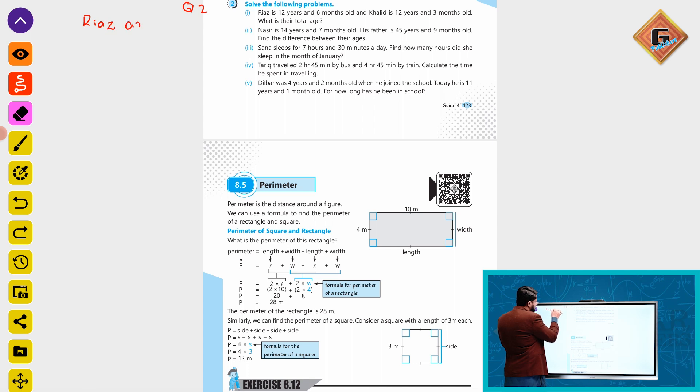Riyaz's age is 12 years and 6 months. And Khalid's age is how much? 12 years and 3 months. 6 or 3 equals 9 months, and 12 or 12 equals 24 years.